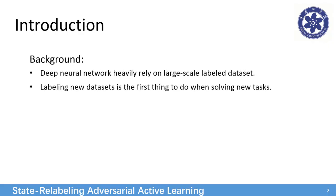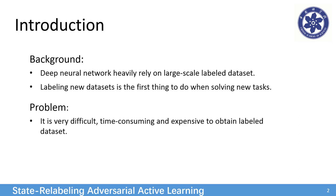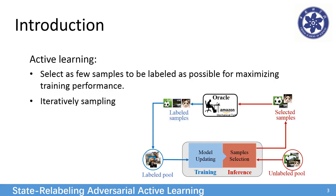Deep learning models still rely on large-scale datasets. The problem is it's time-consuming and expensive to label a dataset. Our work attempts to solve this problem by active learning. The goal of active learning is to select as few samples to be labeled as possible for maximizing training performance.